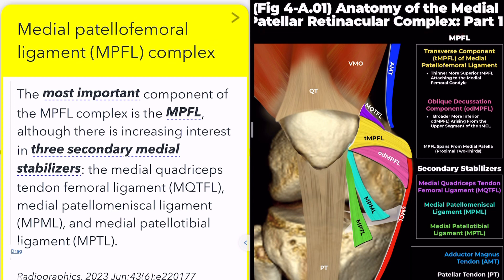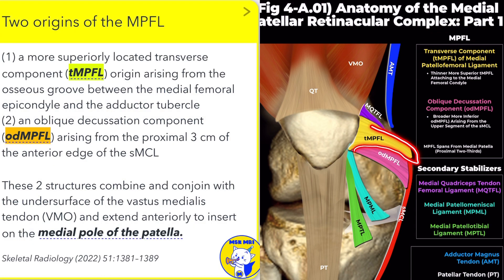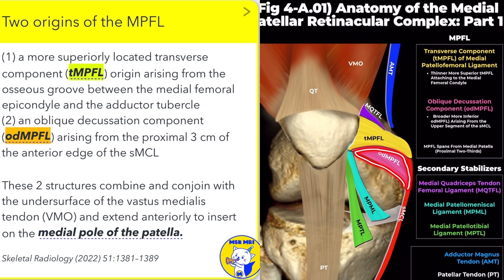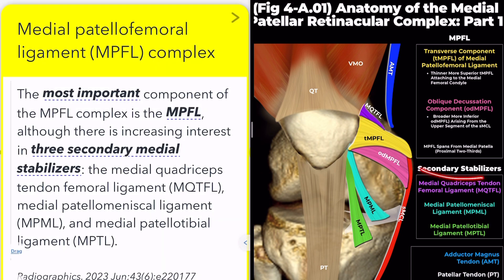The key structure is the medial patellofemoral ligament itself. It has a superior transverse portion arising between the medial femoral epicondyle and adductor tubercle, and an oblique decussation portion from the superficial medial collateral ligament. These two portions combine and insert onto the medial patella. There are also three secondary medial stabilizers to know about.